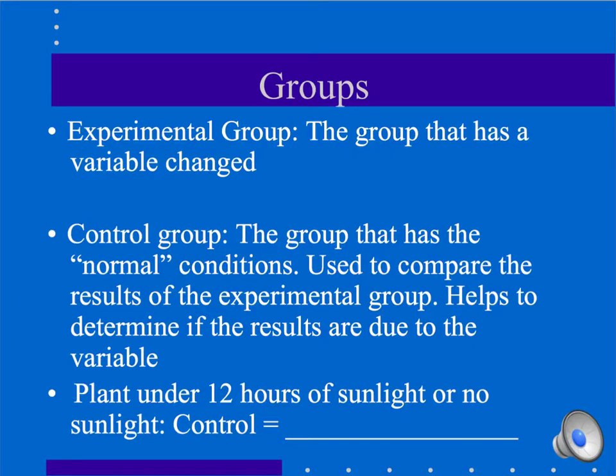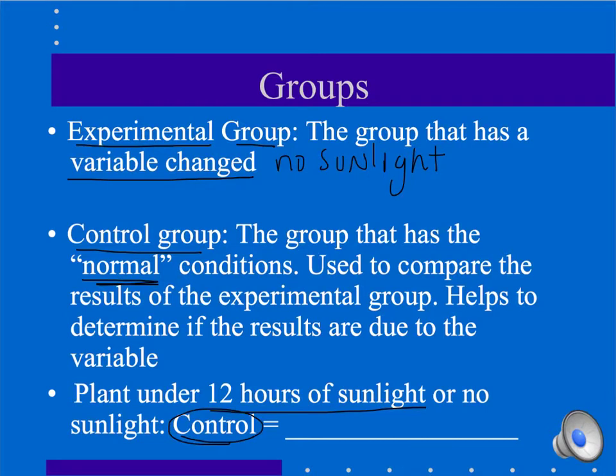Some other variables you will hear named include the experimental group. That's the group that has the variable changed. In our example, that would be the group with no sunlight. And then there is the control group, which is the group that is under normal conditions. Normally, plants get 12 hours of sunlight, so that is our control, the 12 hour sunlight group. It's important that you understand all of these different kinds of variables and your experimental group or your control group because you're going to be identifying all of them when you design your own experiment.